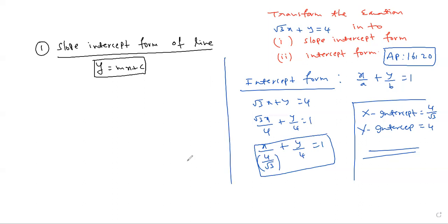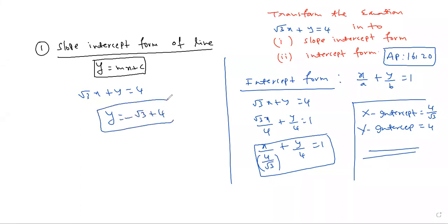Next, using y is equal to mx plus c. Given root 3x plus y is equal to 4, you can write y equal to minus root 3x plus 4. So slope m is equal to minus root 3 and c is 4.